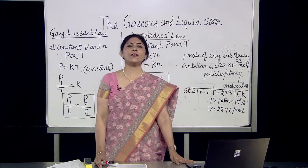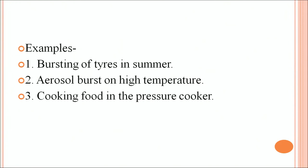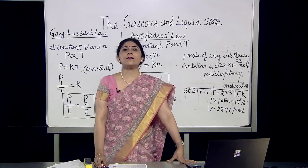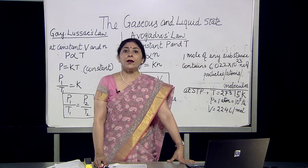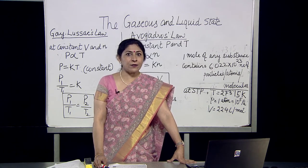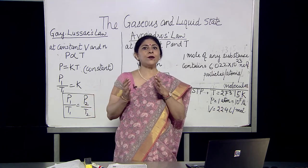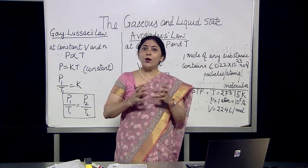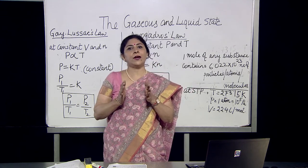A very interesting real-life example is the bursting of tires in summer. In summer, temperature is very high and the volume is fixed or constant, but the pressure inside the tire increases because temperature is directly proportional to pressure. Because the pressure gets too high and the tire can't expand since volume is fixed, the tire gets burst.